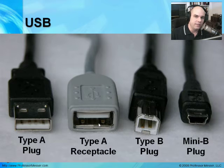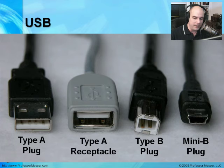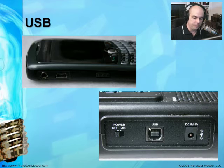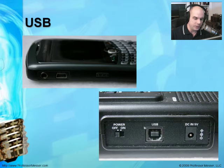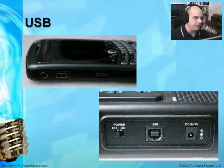On the other end of that wire is usually a different kind of plug — a Type B plug. This is a large square-like connection. There's also this Mini B plug, which you'll see on many devices. My BlackBerry uses that Mini B connection. The larger square connection is used on the voice recording system we're using right now. The larger connectors hold better and ensure a good connection on USB components.